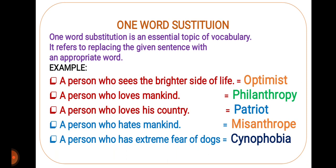For example, a person who sees the brighter side of life is called an optimist. A person who loves mankind is called philanthropy. A person who loves his country is called patriot. A person who hates mankind is called misanthropy. A person who has extreme fear of dogs is called sinophobia.